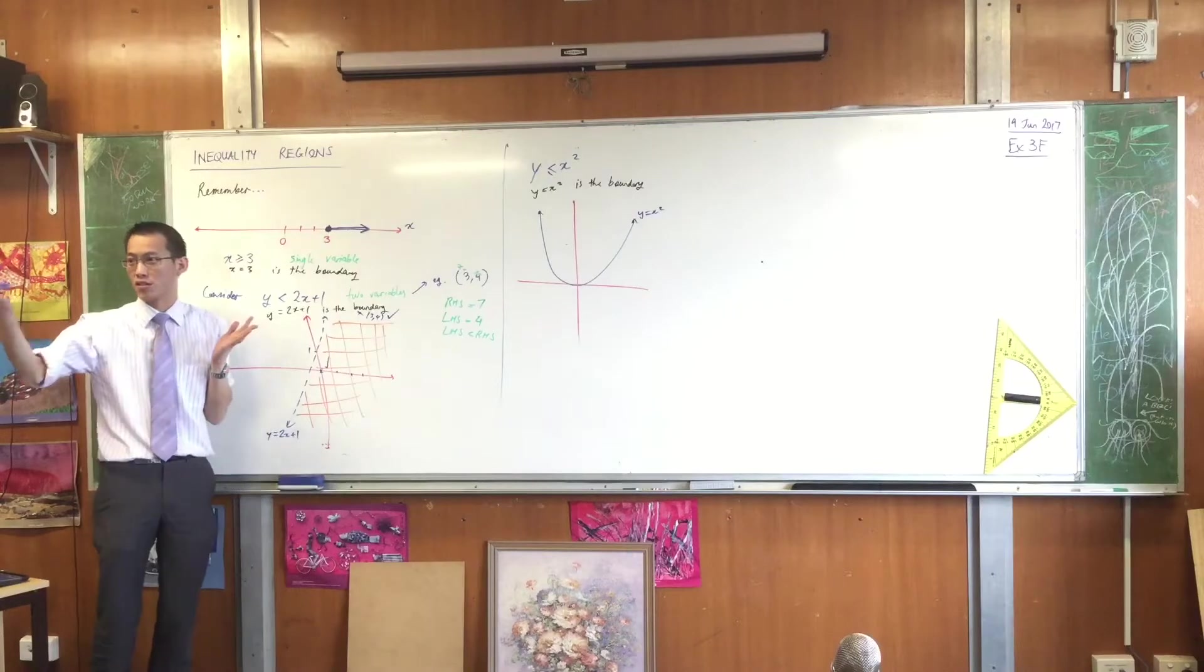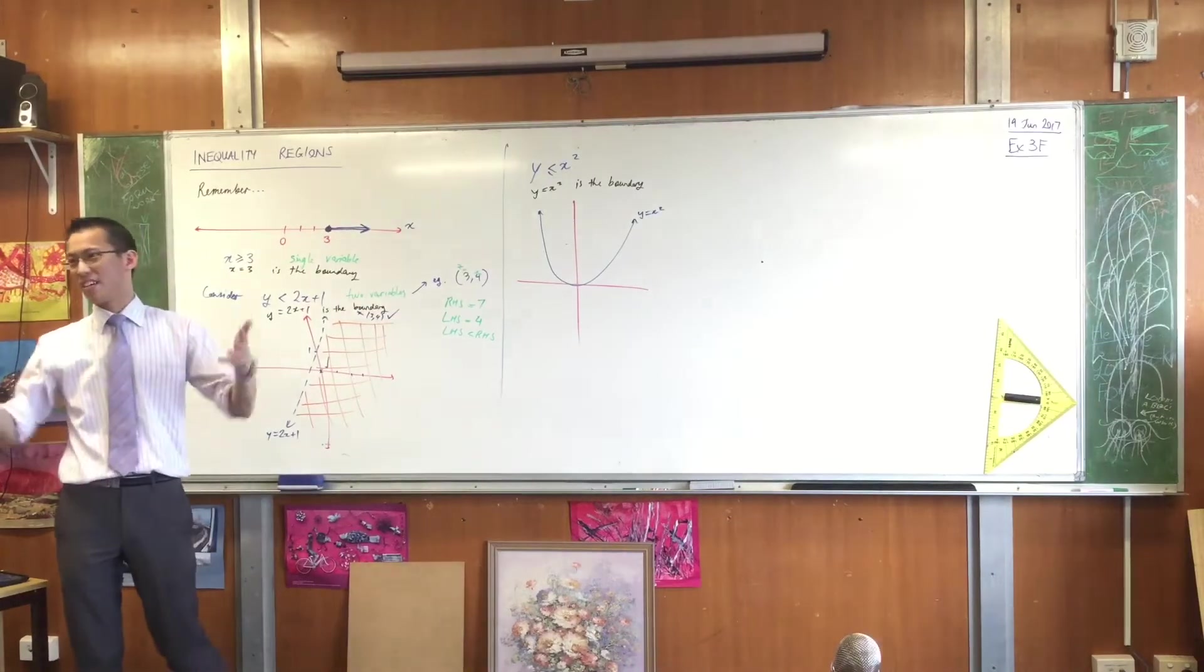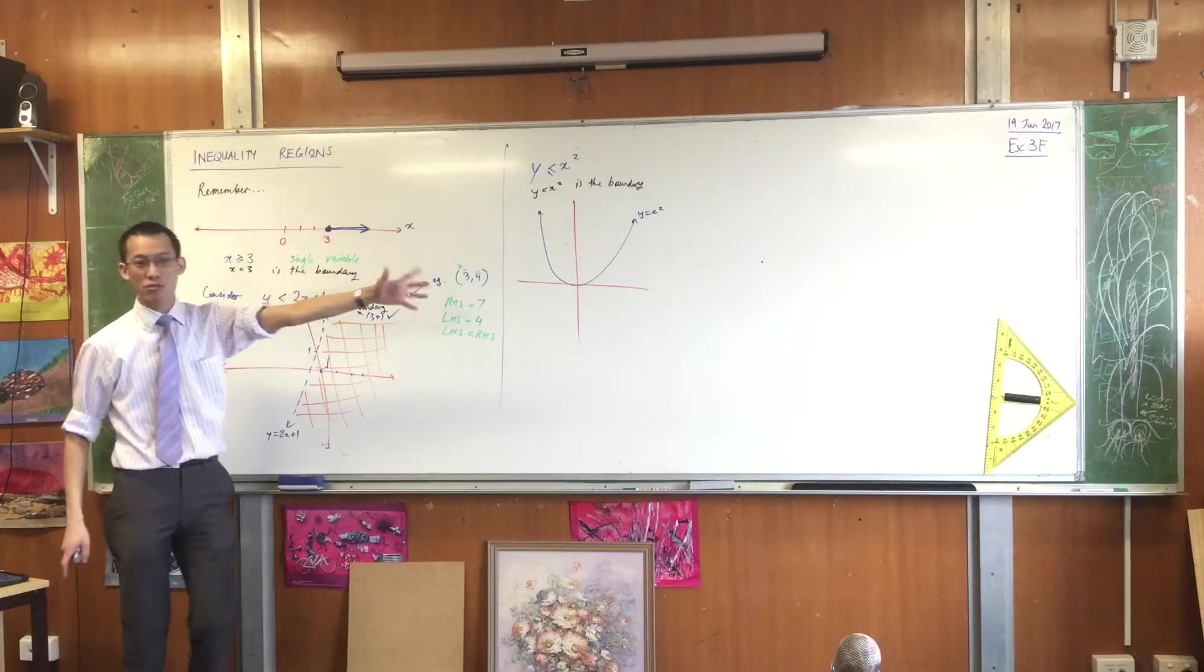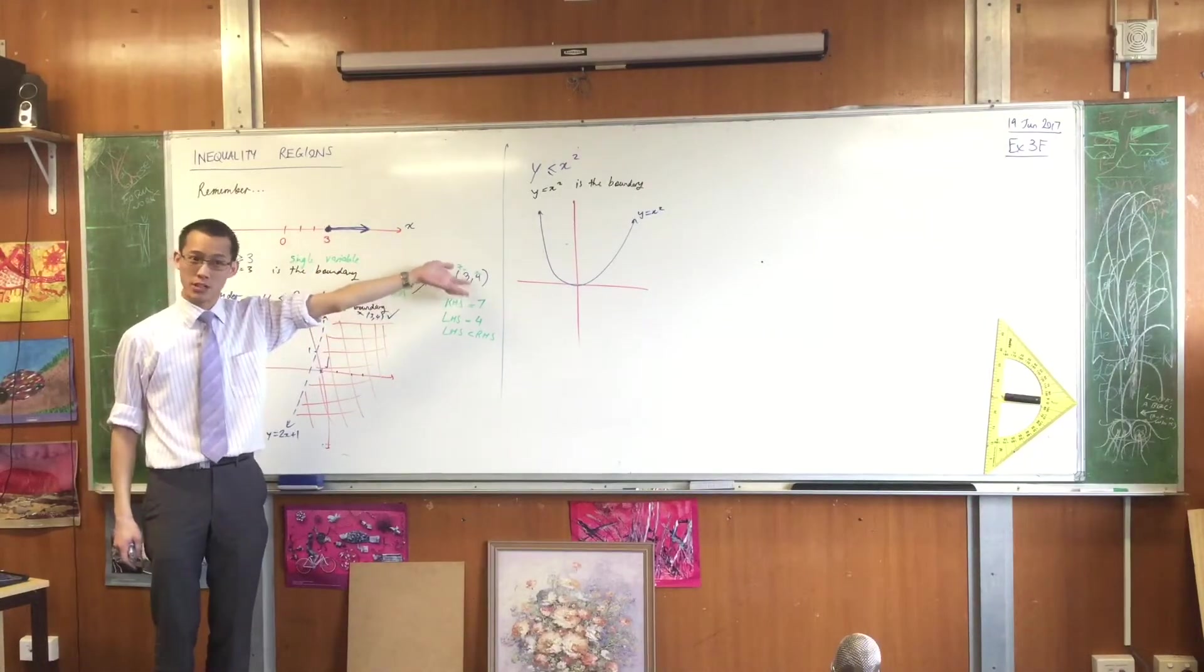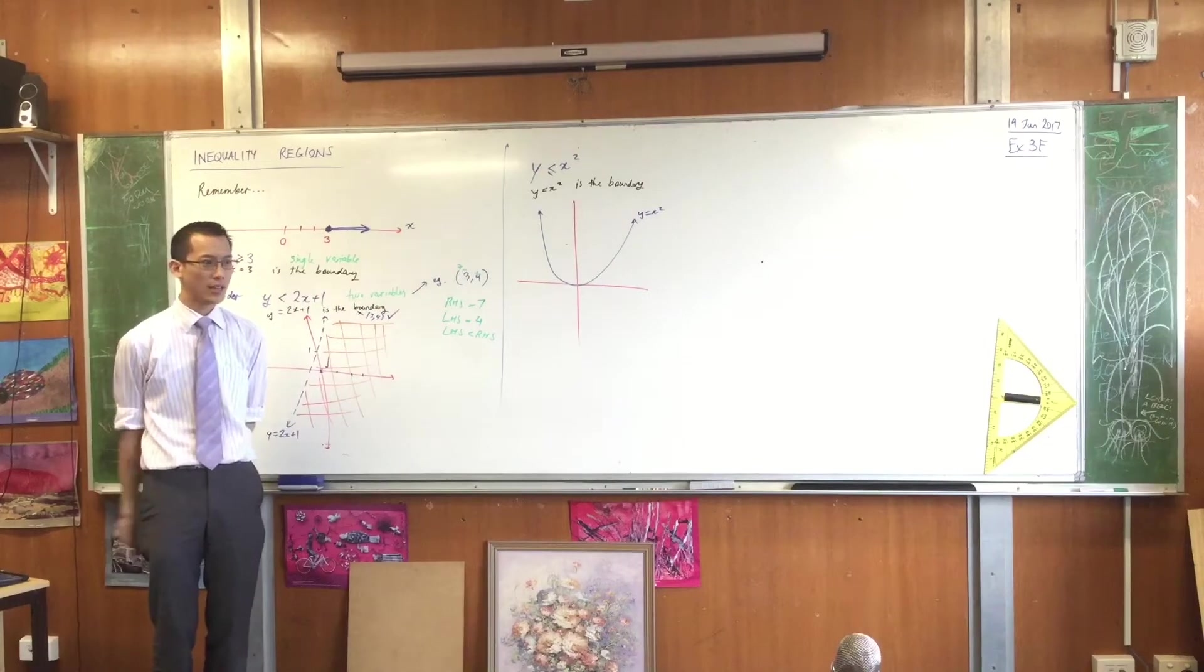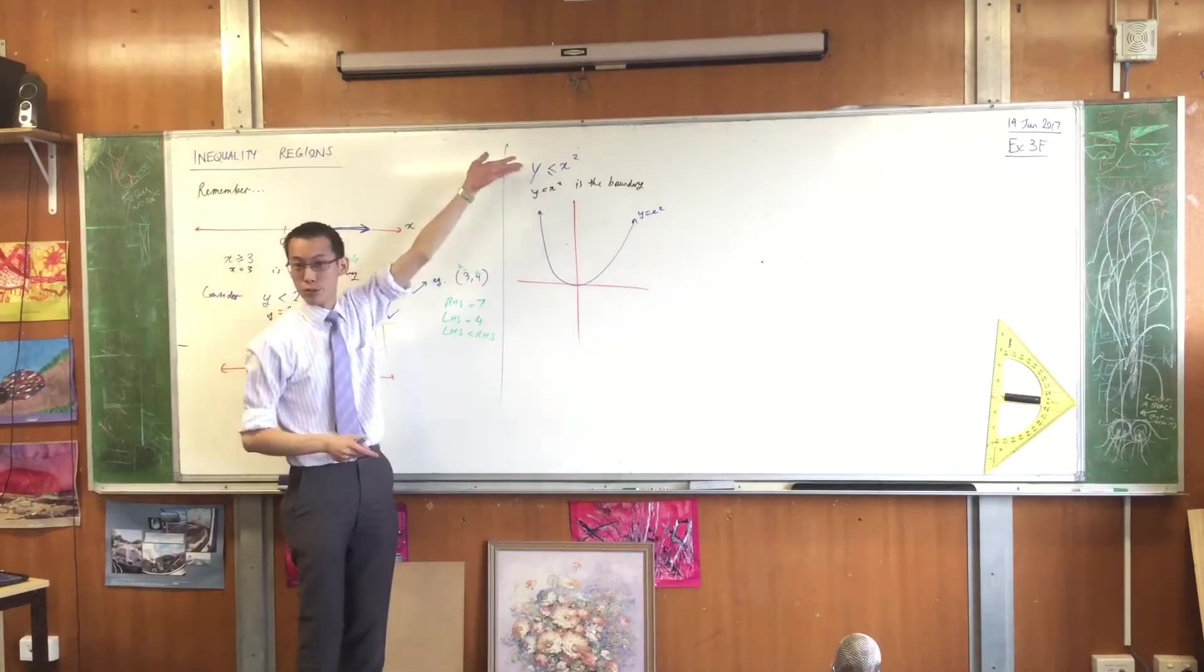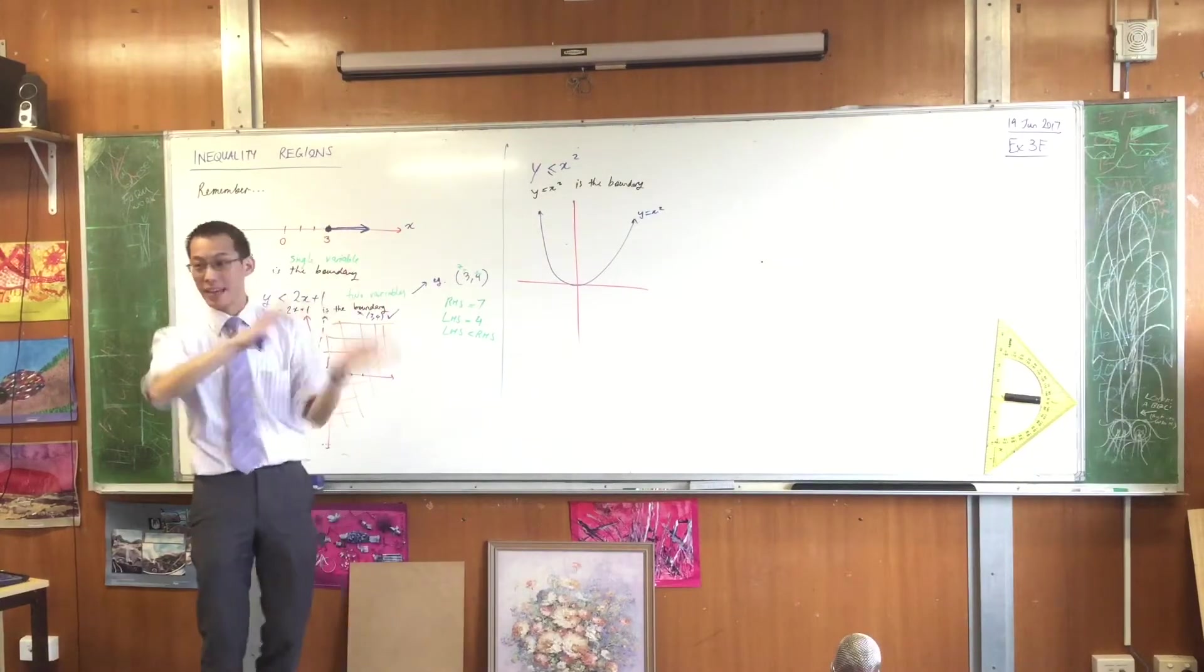Yeah because it's the easiest to sub in. Yeah zero and zero are always easy to sub in, they just make things really simple. In this case you cannot or you won't get much value out of testing the origin. Why not? It's right on the boundary. So number one, it's true, but that doesn't tell you anything about which side works.